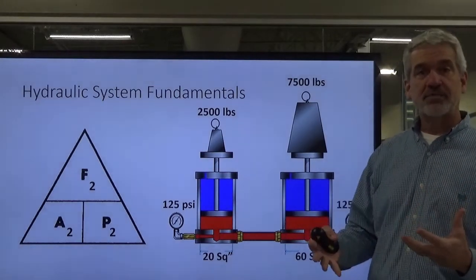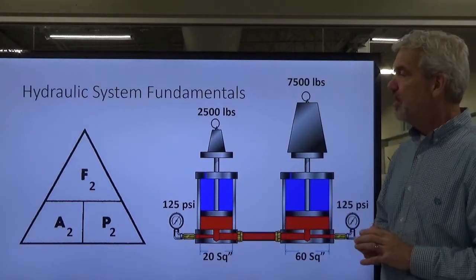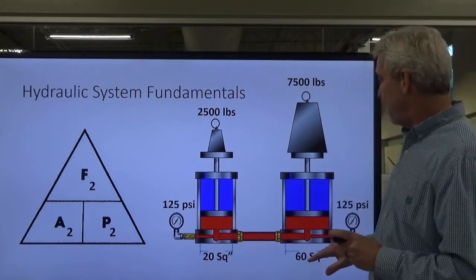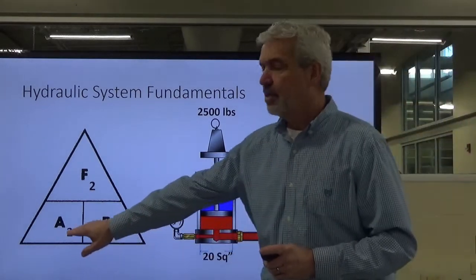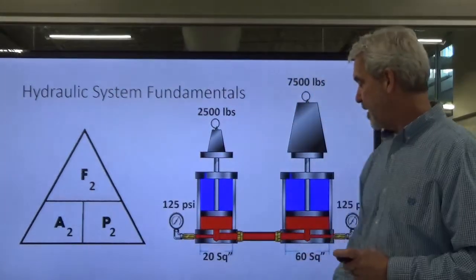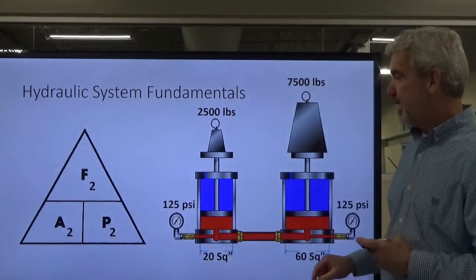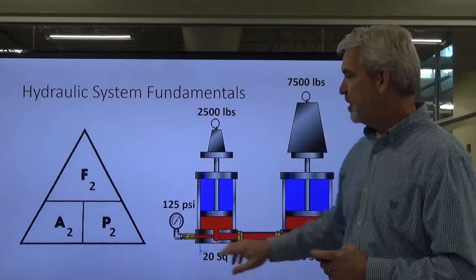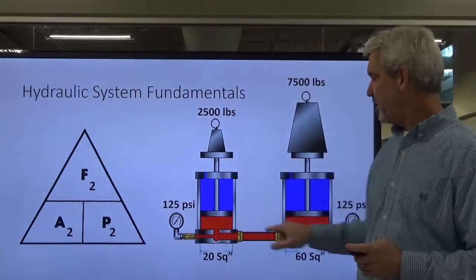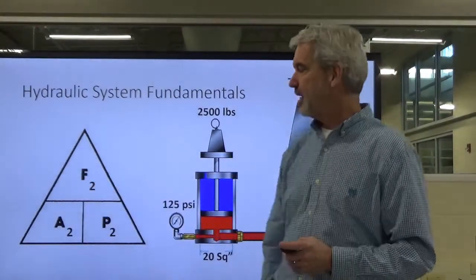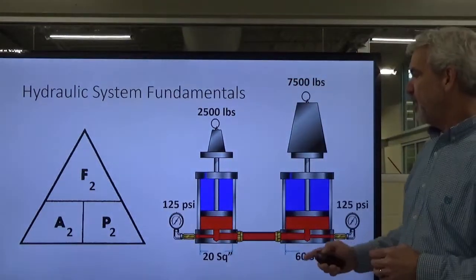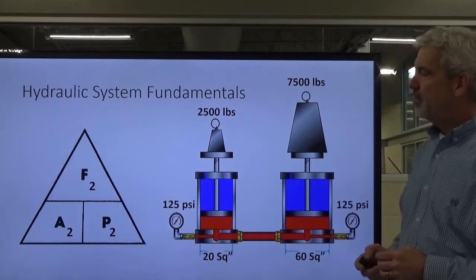So we create another triangle, just for us to be able to do the formulas. So we have, at this point we know that we've got a 60 square inch surface area for that second piston. It's three times the size of the first one. So we've got the 60 right there. We already created the 125 pounds per square inch right here. We've got these two. That means we can figure that one out just like that. So we multiply the 60 times the 125.